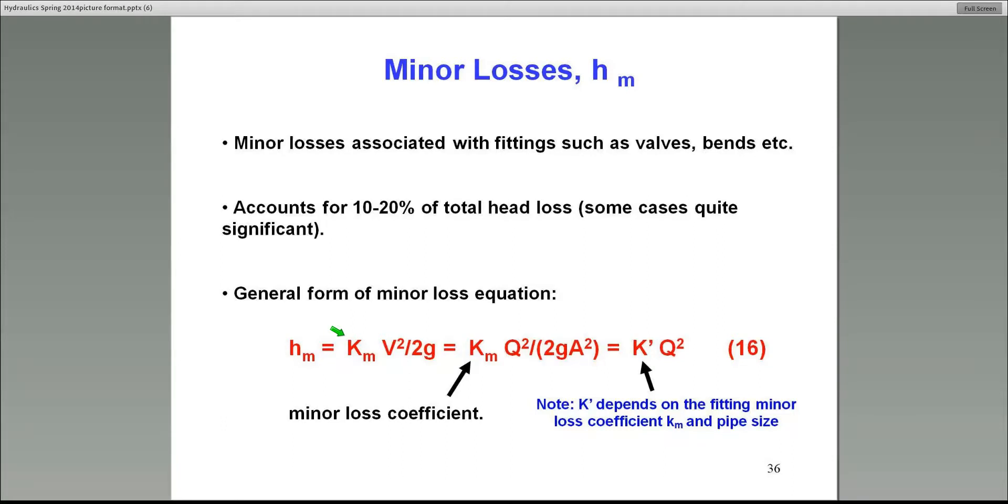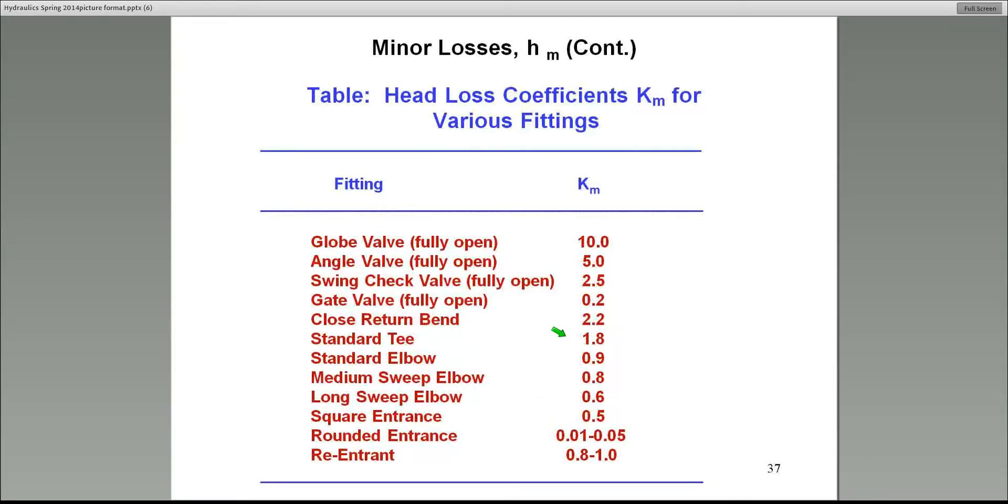Now, I can rearrange this also into the same form as we did for the friction loss. And that is in terms of Q, the discharge. Recognizing the fact that Q over A is velocity, and therefore, manipulate that equation and finally into this form, where K prime is now a function, not only of K_m, but also the cross-sectional area of the pipe, which is okay because most of the time that is true. It depends on the fitting, which pipe it's in, the size of that pipe is important also in the head loss situation.